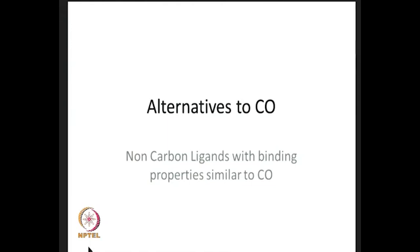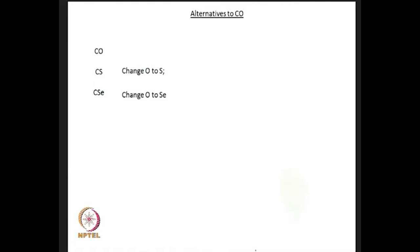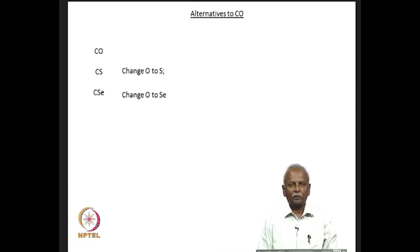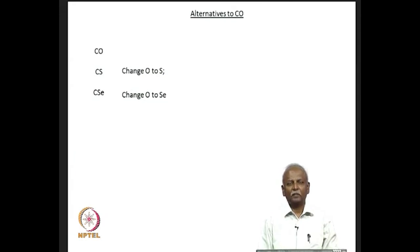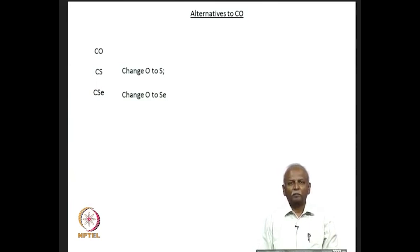In changing from carbon monoxide to other ligands, we notice that we can very simply replace the oxygen by an element from the same group, that is sulphur or selenium. These ligands — carbon monosulphide and carbon monoselenide — are excellent ligands, but the preparation of molecules containing these ligands turns out to be quite difficult. Because of this and also because of their toxicity, people have tried to move away from these ligands and look for alternatives.